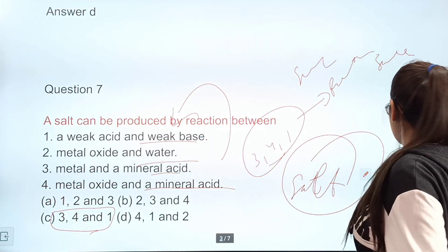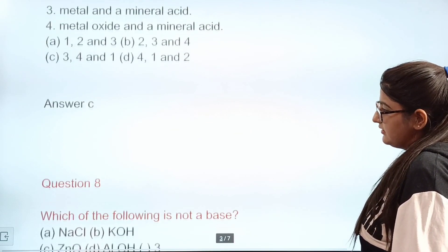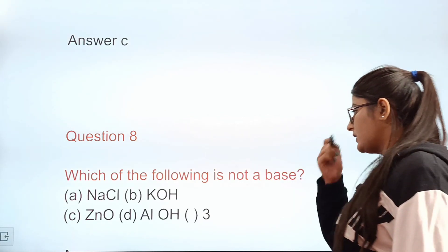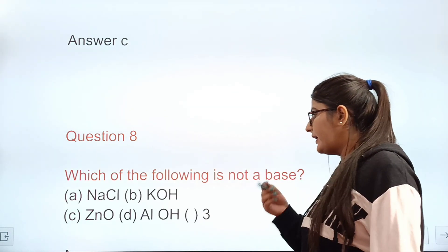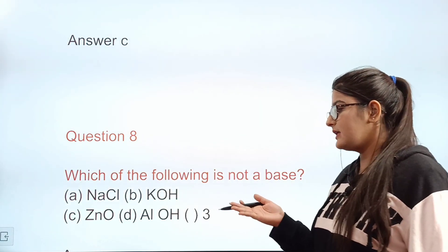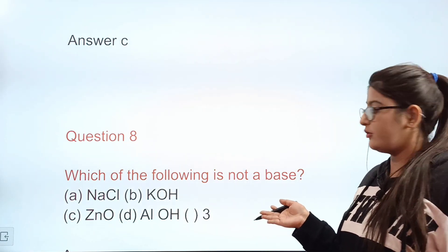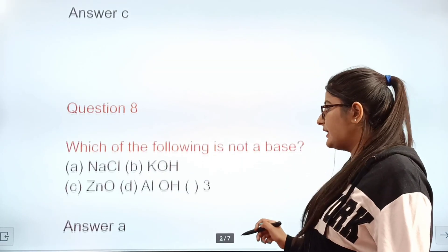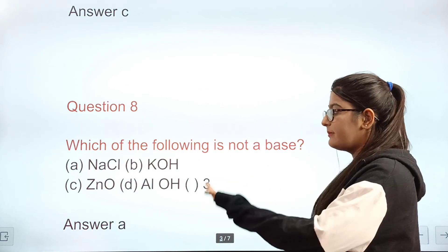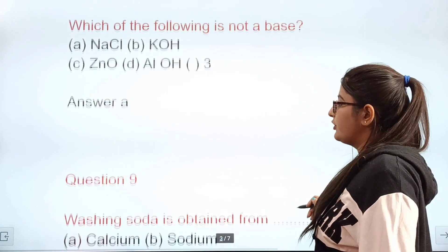Question 8: Which of the following is not a base? Option A: sodium chloride. Option B: potassium hydroxide. Option C: zinc oxide. Option D: aluminium hydroxide. Correct answer: A — sodium chloride (NaCl) is not a base.